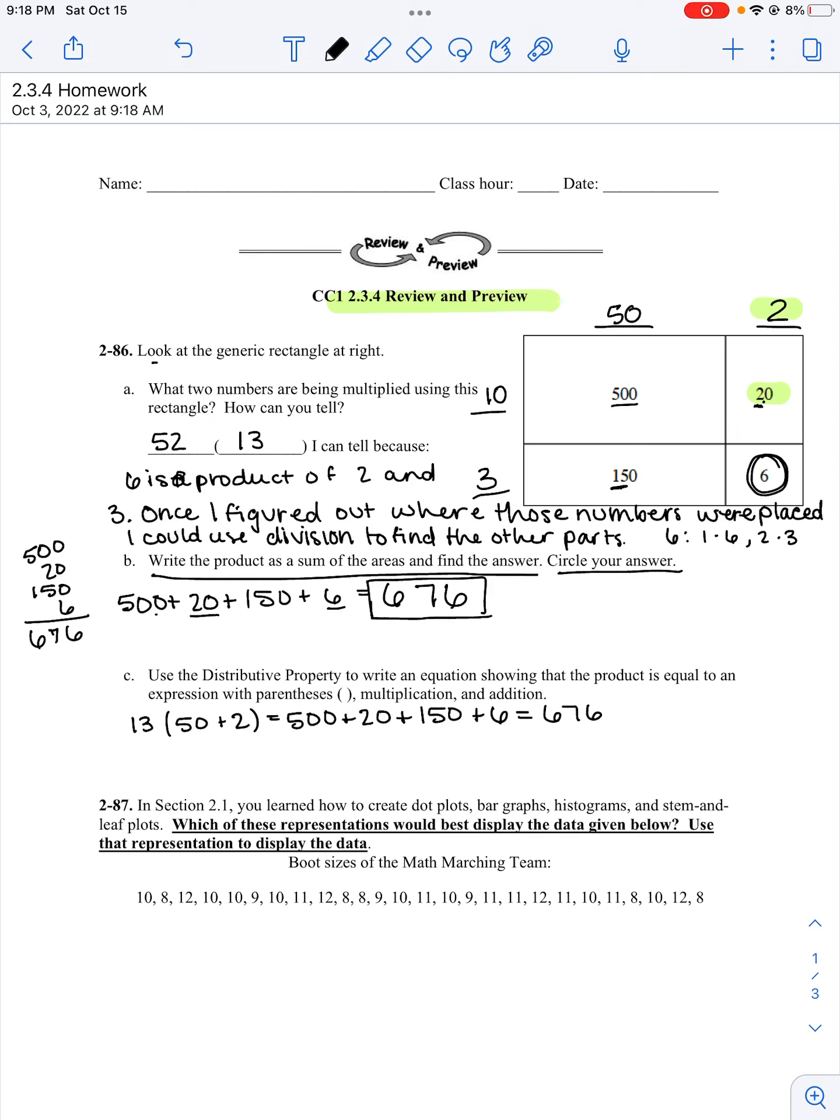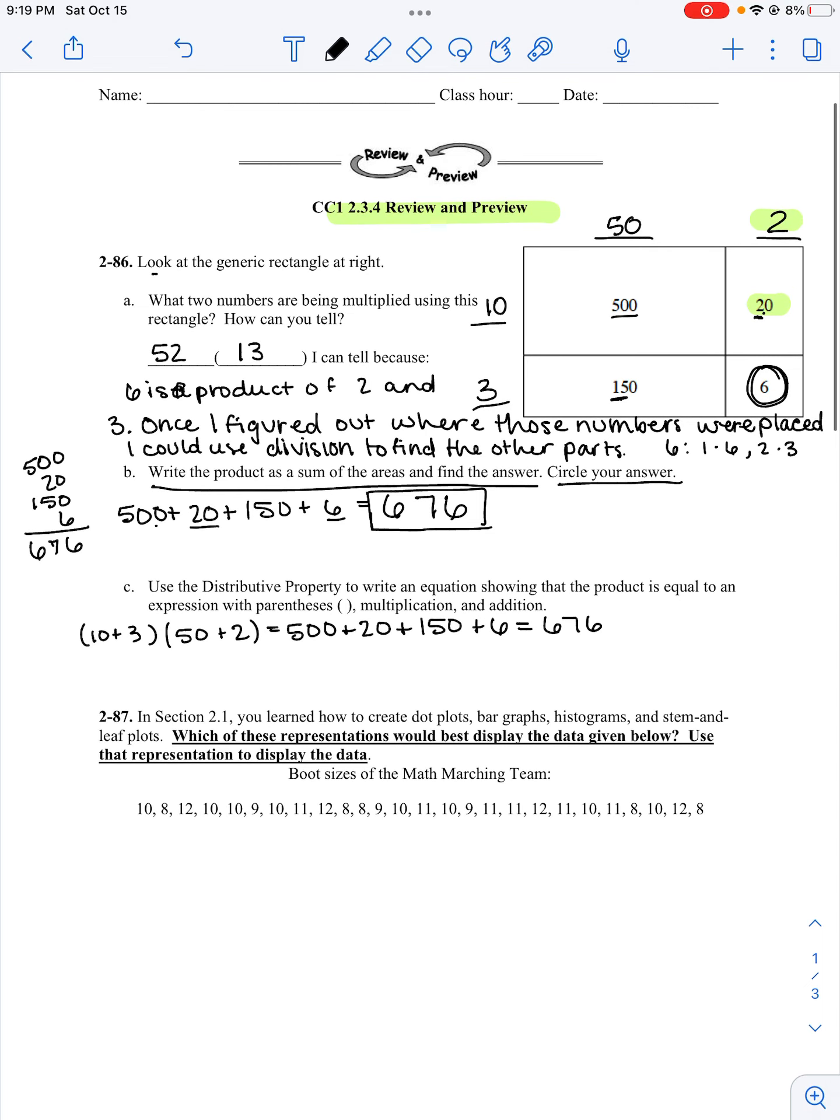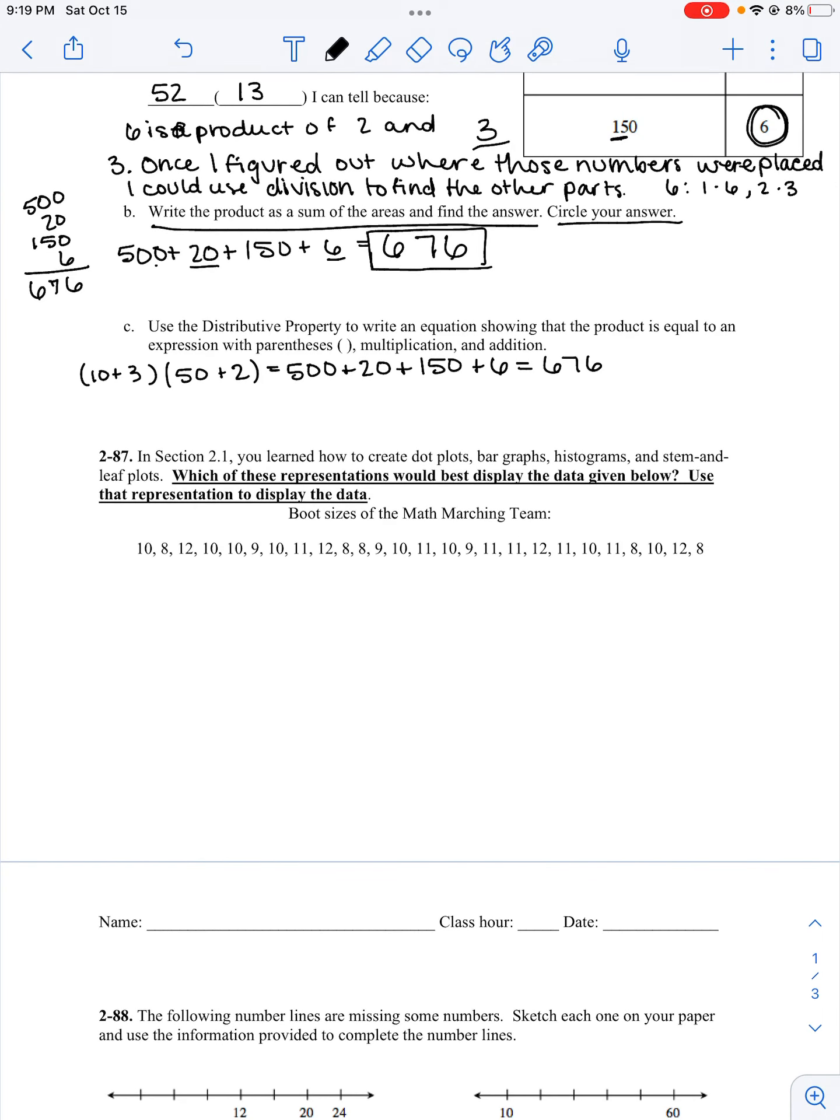Now, if I'm really being a stickler, we could write my 13 in expanded form in the generic rectangle. I could write them both in expanded form. That way I don't get as confused.